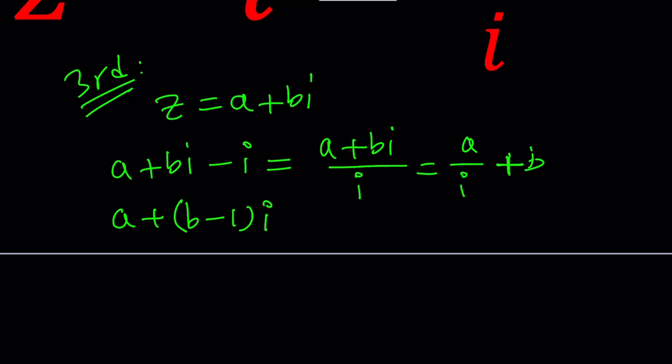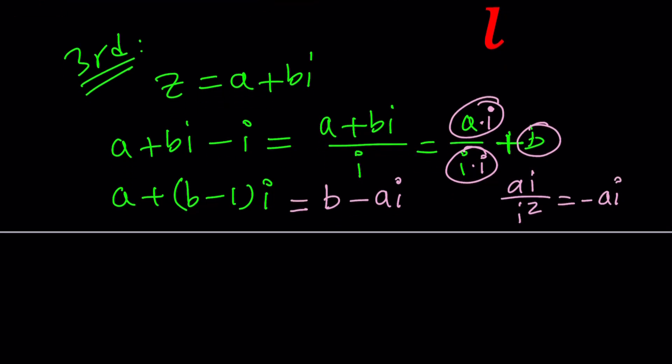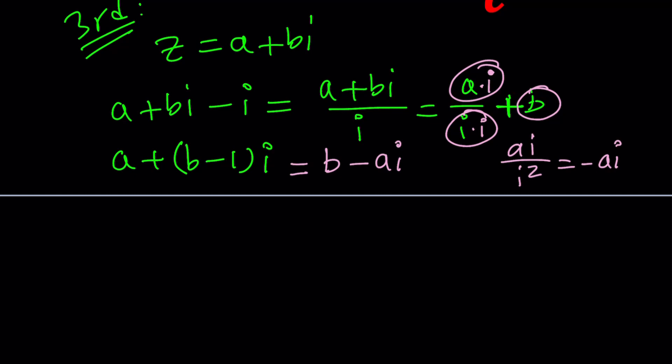On the right-hand side, if you multiply the top and the bottom by I, some people also multiply by negative I, we get an A I here divided by negative 1. I squared is negative 1, remember? So that's going to give us negative A I. But if you write the B first, that's going to be B minus A I. So A I divided by I squared becomes negative A I. Not artificial intelligence, it's just the imaginary part.